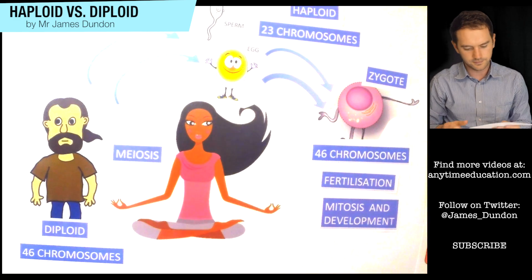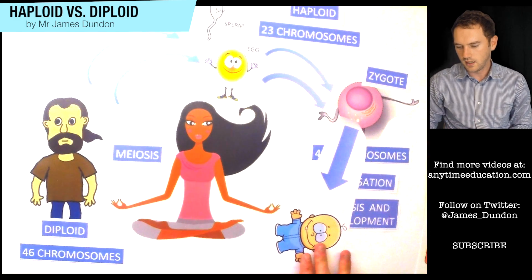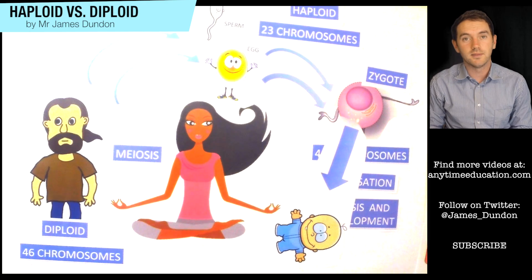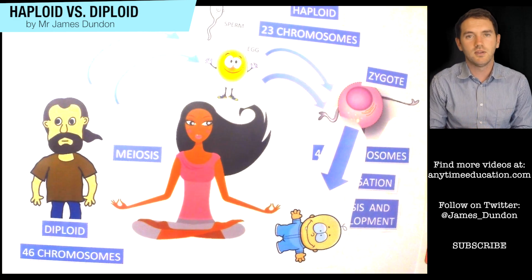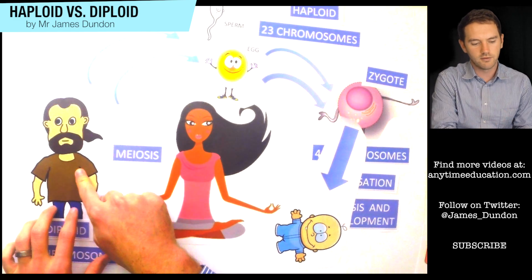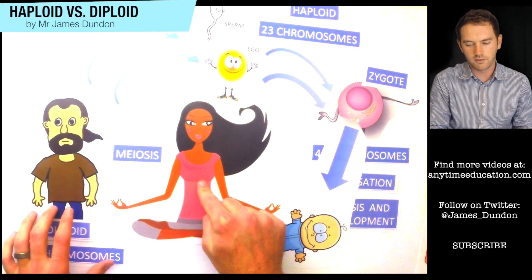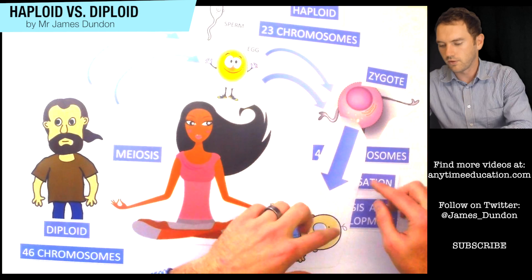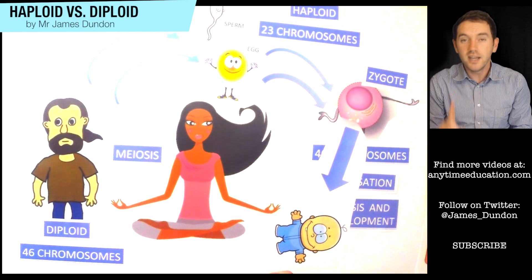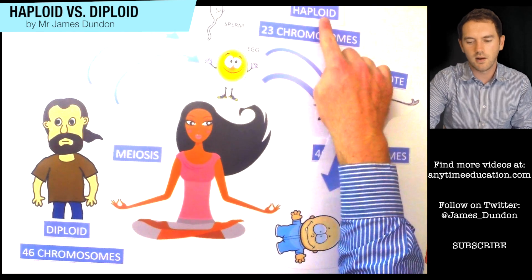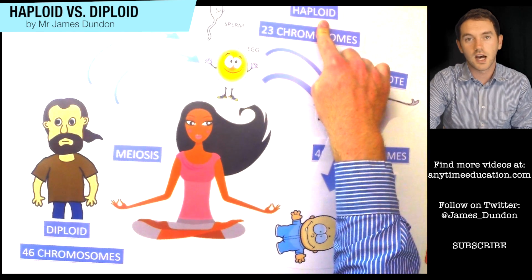That zygote or embryo is then allowed to undergo mitosis and development, and what we end up getting is a developed baby. So just to recap: diploid means we've got both homologous chromosomes forming a pair — one originally from dad and one from mum, combined through fertilization. The minute we don't have one of each, we are haploid — half the number of chromosomes, only one chromosome of each pair.